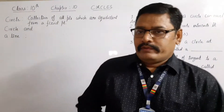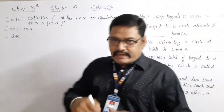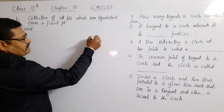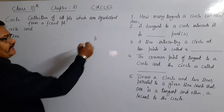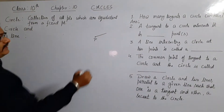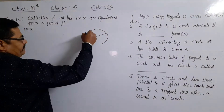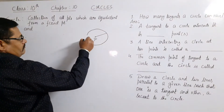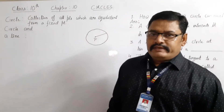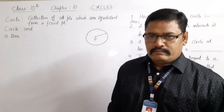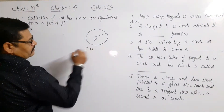Equidistant means equal distance. A circle is a collection of all points which are equidistant from a fixed point. Can you tell what is the name of this fixed point? This fixed point is called the center of the circle.